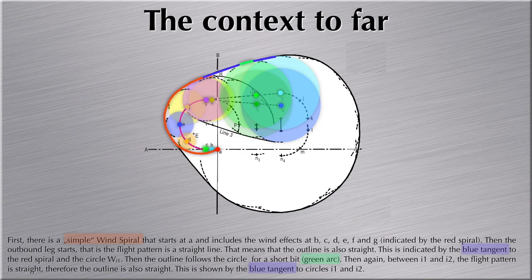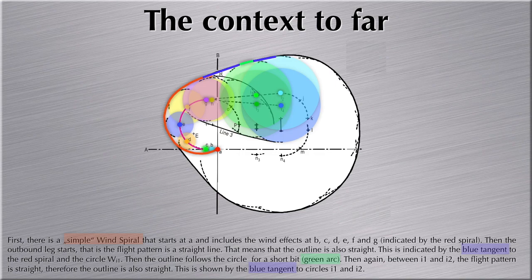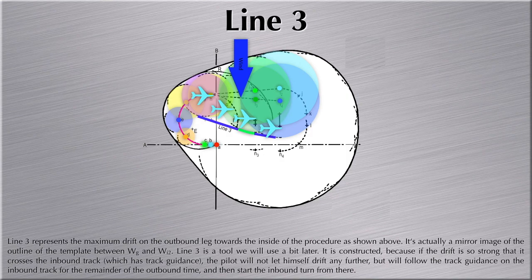Here is some context not actually described in the book, for better understanding. You see the red spiral starting from A going around all the wind effects of the outbound turn. Then there is a blue tangent straight line to the wind effects at G and the wind effect at I1. It follows the green arc, a short part of the wind effect circle I1, then again a straight blue tangent line between I1 and I2.